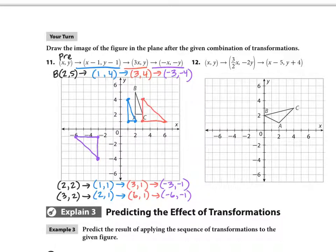That's what we end up with. We do want to label our final image with our A prime, B prime, C prime. A prime goes here. B prime is down here. And C prime is at negative 6, negative 1.